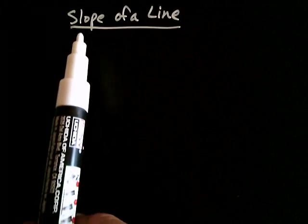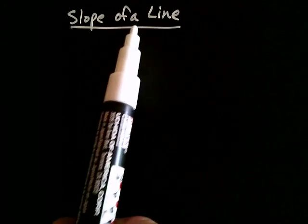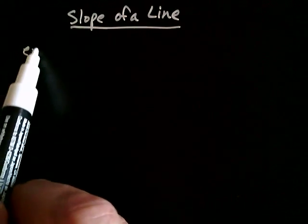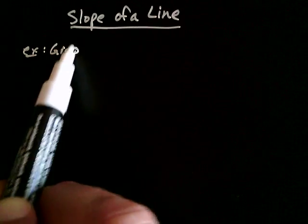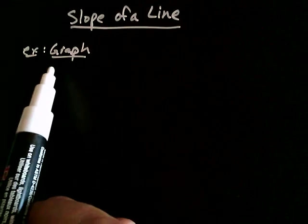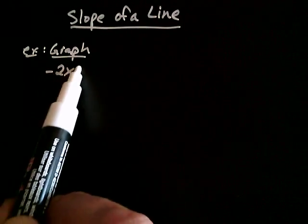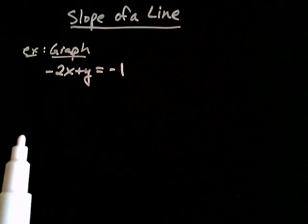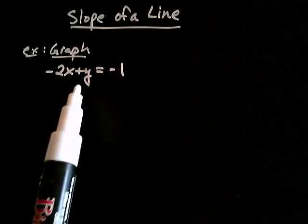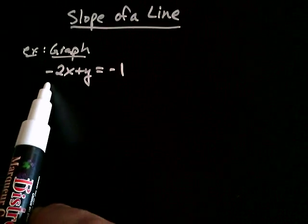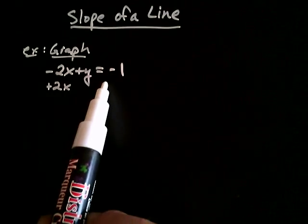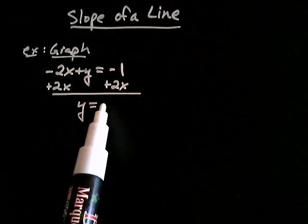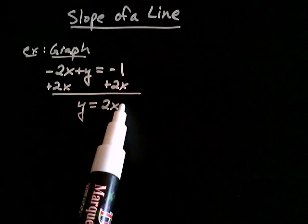Hi. In this video, we're going to talk about the slope of a line, and we're going to start off by graphing a line. Let's say that you wanted to graph the line negative 2x plus y is equal to negative 1. We're going to graph this line by first isolating the y, so we're going to add 2x to both sides, and that gives us y is equal to 2x minus 1.